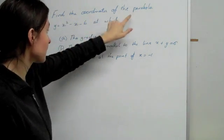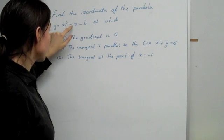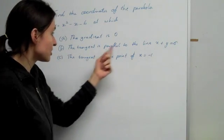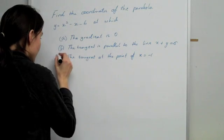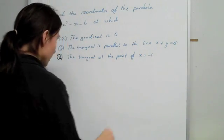It says find the coordinates of the parabola y = x² - x - 6 at which the gradient is 0, the tangent is parallel to that line, and then I've added in a second version of the question. That question is just going to be separate to all of these.